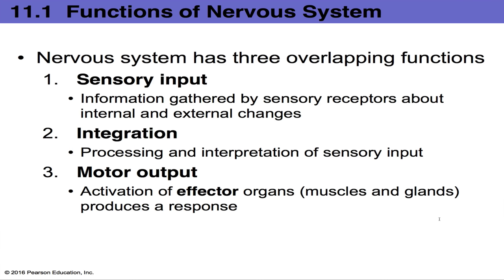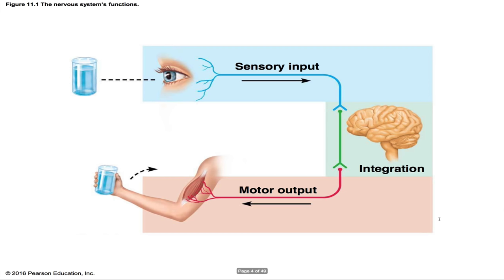The integration center then sends a signal via motor output to effector organs — usually muscles or glands — which produce some type of response. For example, when we see a glass of water, the eye acts as the sensory receptor; that visual input is sent to the brain, which then decides: this is water, it is safe, it should be drunk.